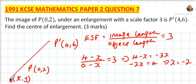We do the same for y. The distance from the center to the image for y divided by the distance to the object should equal 3. So 6 minus y divided by 2 minus y equals 3. Cross multiply: 6 minus y equals 6 minus 3y.